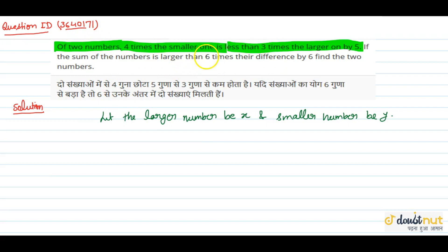The second condition is four times the smaller, which means 4y, and the larger part is 3 times, so 3x. The smaller part is less than the larger part, so 3x minus 4y equal to how much? 5. So 3x minus 4y equal to 5. This is equation number 1.